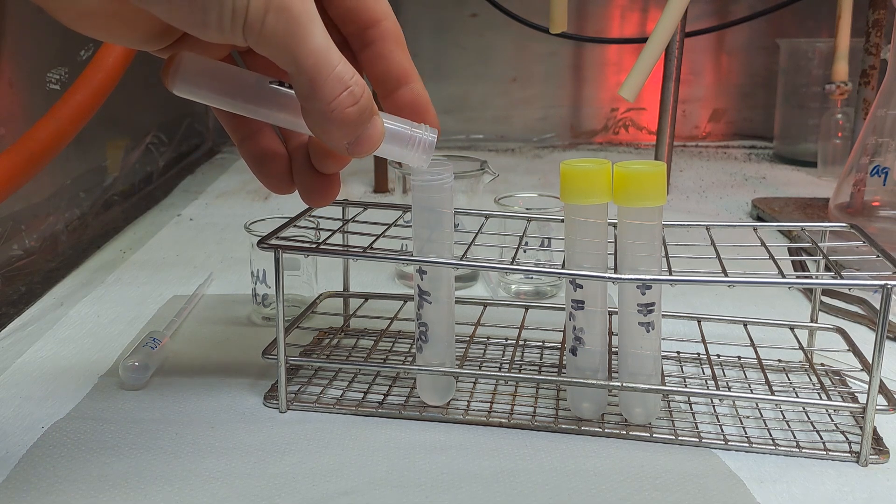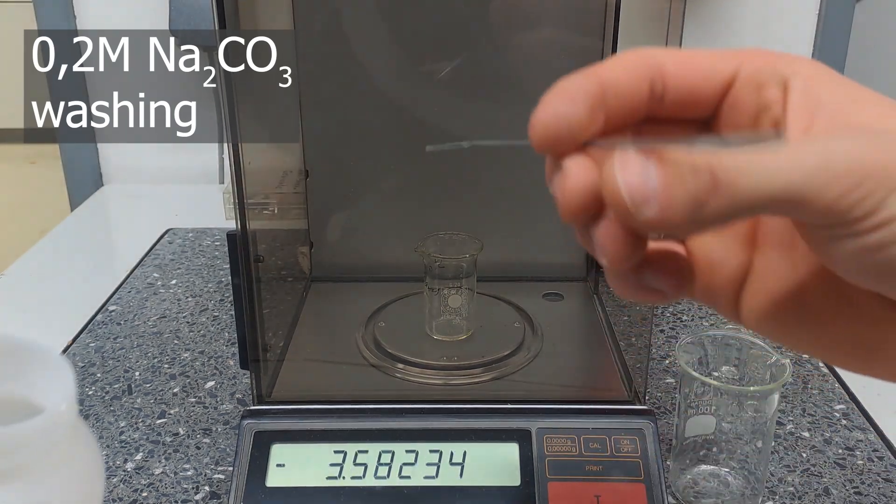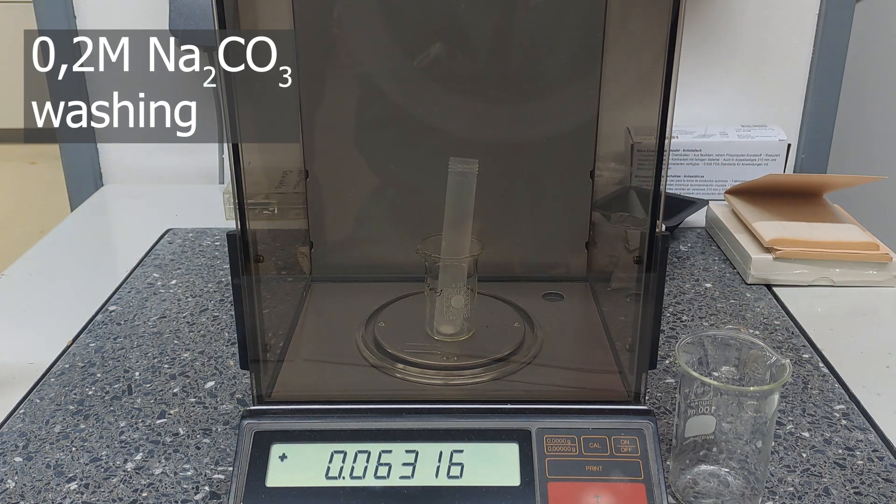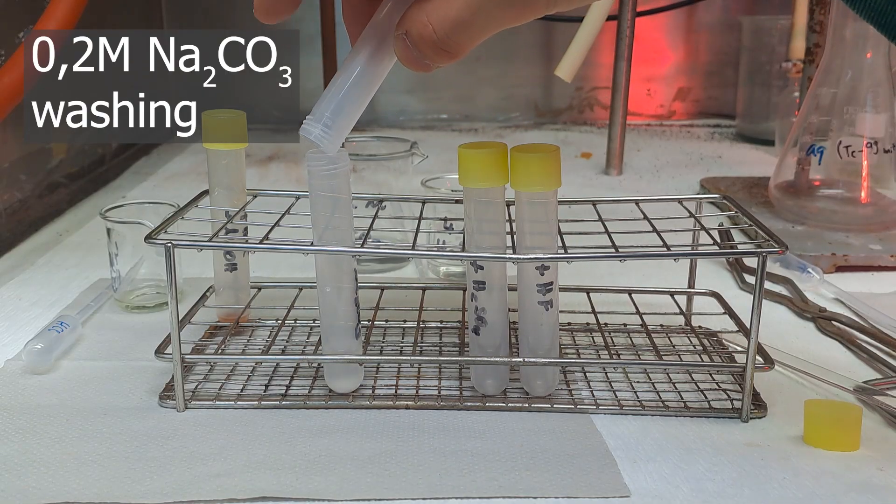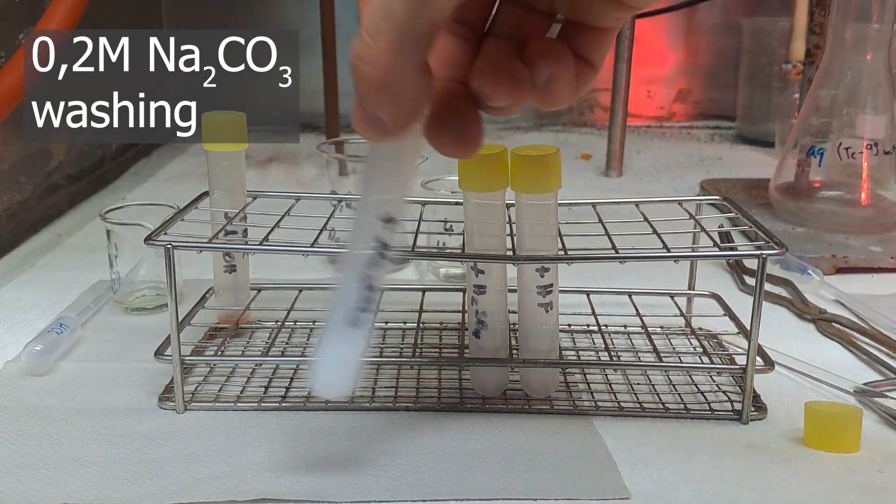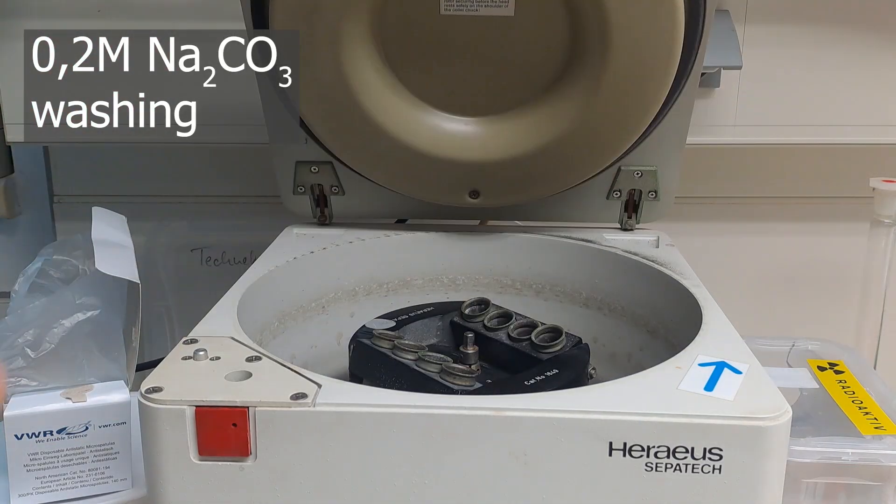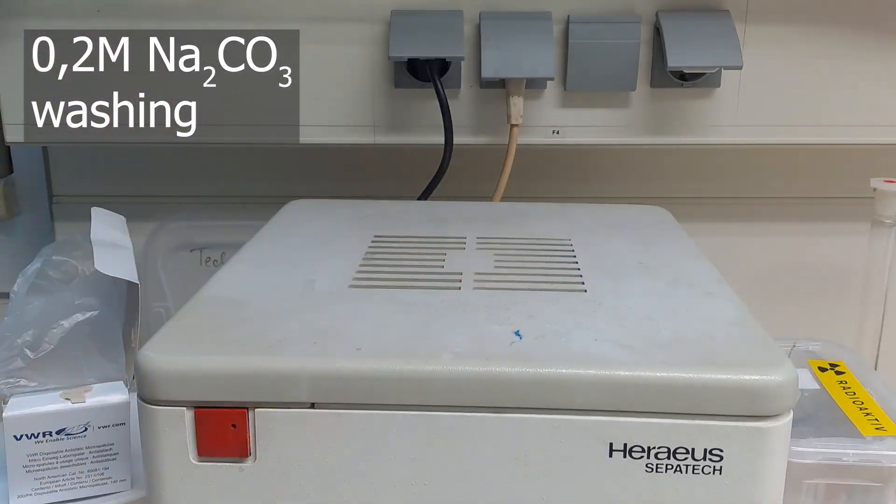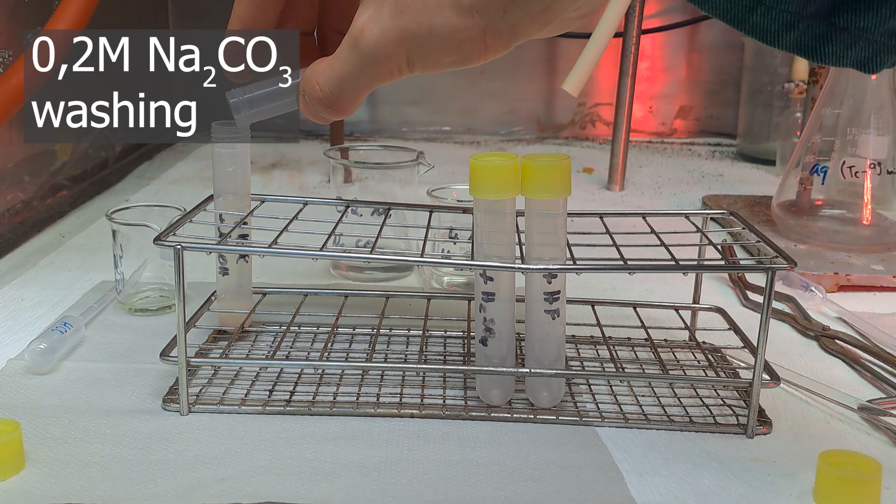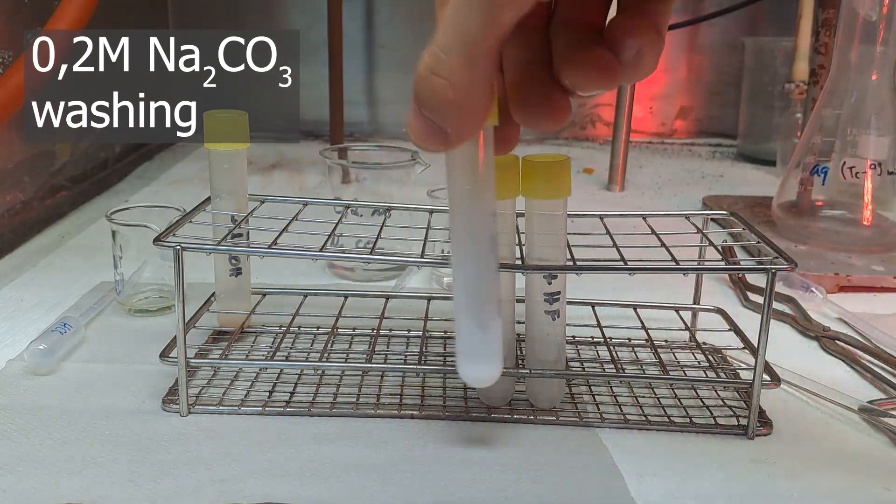The now transition metal-free supernatant is carefully decanted off. Now, the volume of the solution is determined. In this case, it is 3 milliliters. And then, so much sodium carbonate is weighted out that a 0.2 molar solution is created. 63.6 milligrams in this case. By adding sodium carbonate, the alkaline earth metals, including barium-133 and calcium-41, are precipitated as carbonates and can then be separated from the alkali metals. The supernatant with dissolved alkali metal ions can carefully be decanted off and the alkaline earth carbonate solid is then washed again with 0.2 molar sodium carbonate solution. Centrifuged again and the supernatant can be decanted off again.